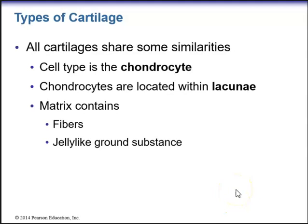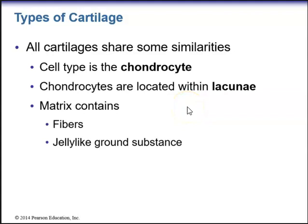All cartilages share similar properties. The mature cell type is called the chondrocyte — anything with the root word 'chondro' refers to cartilage. Chondrocytes are located in spaces called lacunae. Because cartilage is a type of connective tissue, it has an extracellular matrix containing fibers and a jelly-like ground substance. The chondroblast is the cell that produces the fibers and ground substance of the extracellular matrix.